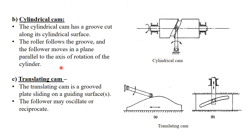The third category of cam is the translating cam. Unlike the disc cam and cylindrical cam which rotate about an axis, in this third case the cam does not rotate but instead reciprocates.